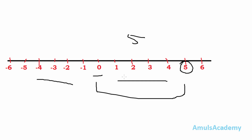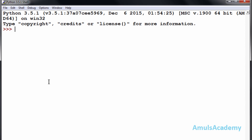You can find out the absolute value of negative numbers also. If you want to find out the absolute value of minus six, that is the distance of minus six from zero — one two three four five six — so absolute value of minus six is six. To use the absolute function we mention abs() and the value inside. For example, abs(5) gives five, and abs(-6) gives six. The absolute function gives the distance of a value from zero.